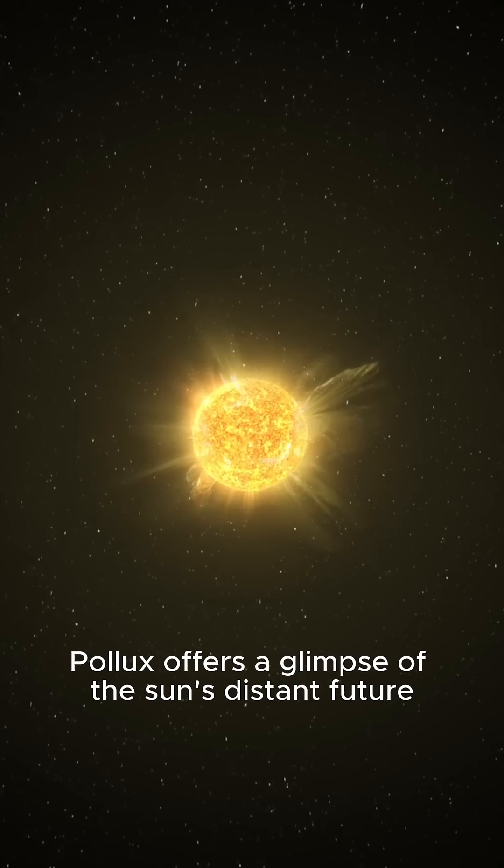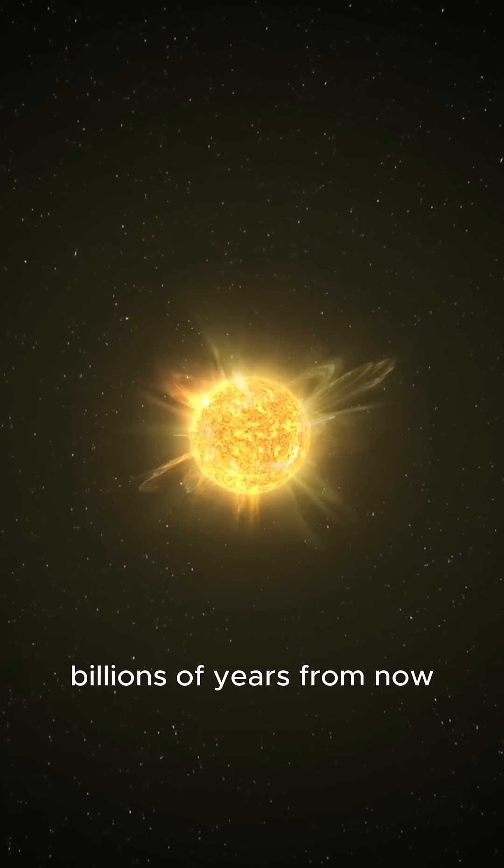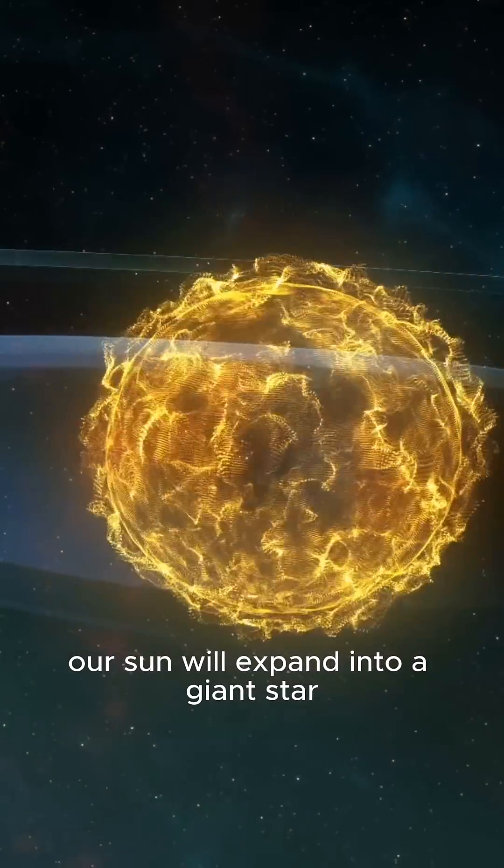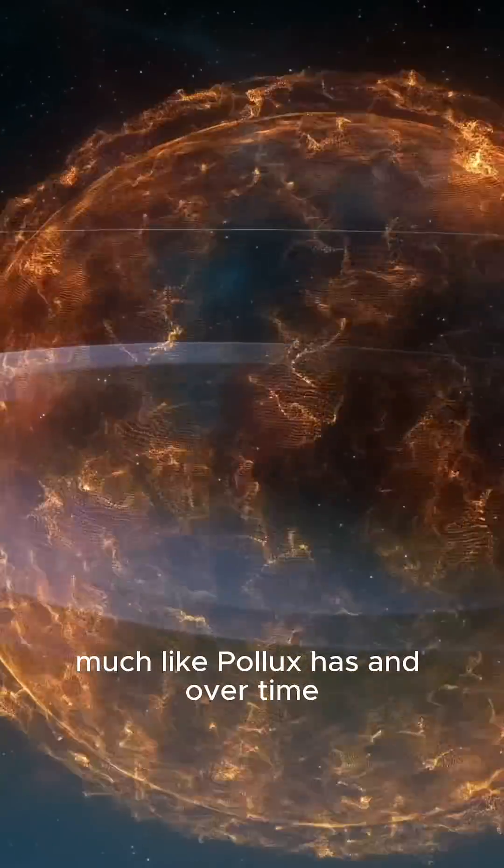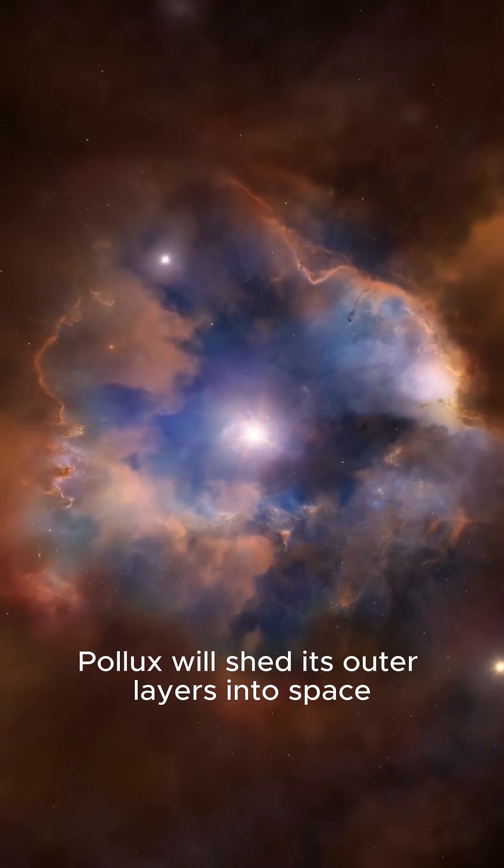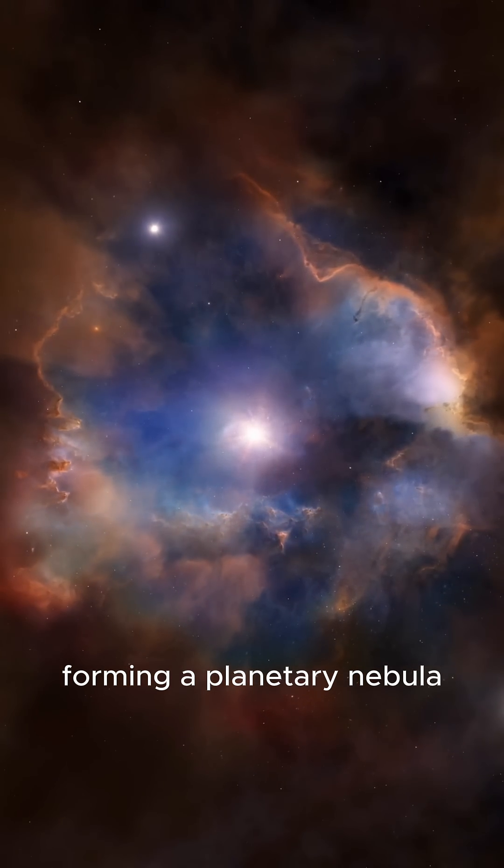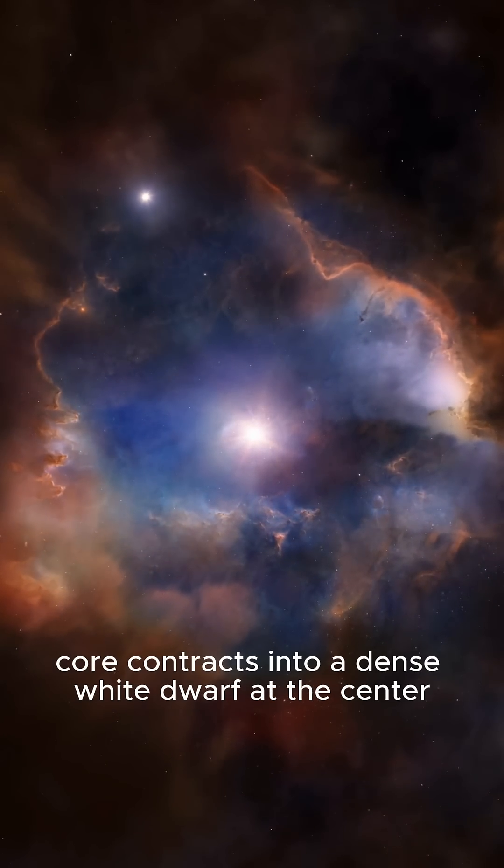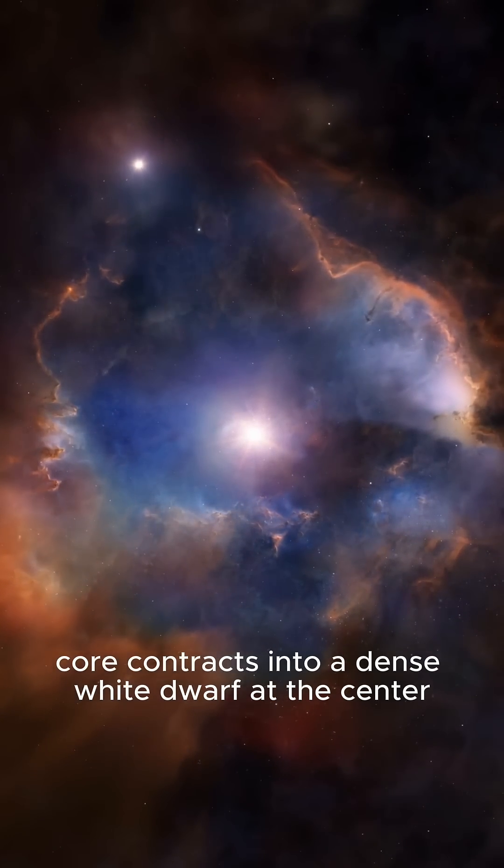Pollux offers a glimpse of the sun's distant future. Millions of years from now, our sun will expand into a giant star, much like Pollux has. Over time, Pollux will shed its outer layers into space, forming a planetary nebula, while the remaining core contracts into a dense white dwarf at the center.